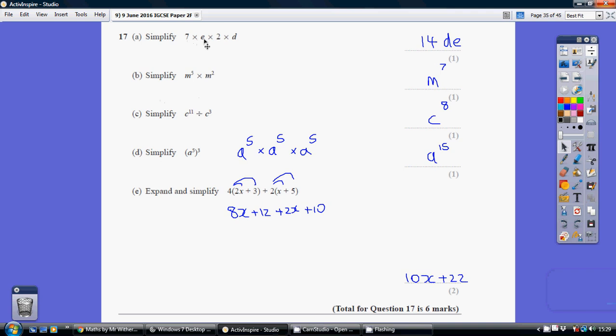Now the index law when you're multiplying, you can add the powers. So 5 and 2 is 7. And when you're dividing, you can take away the powers. 11 take away 3 is 8, so c to the 8th.